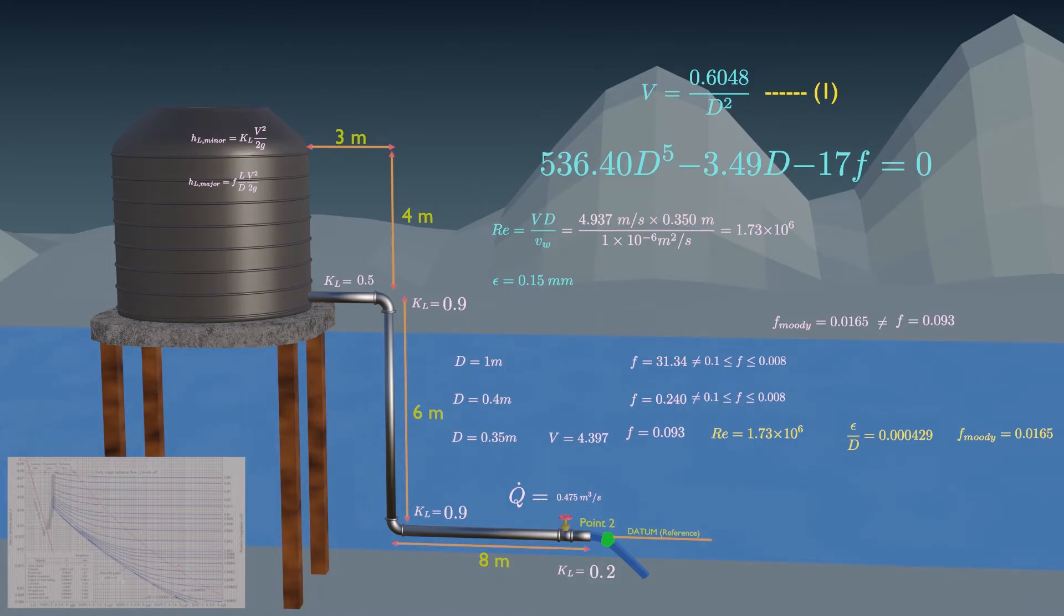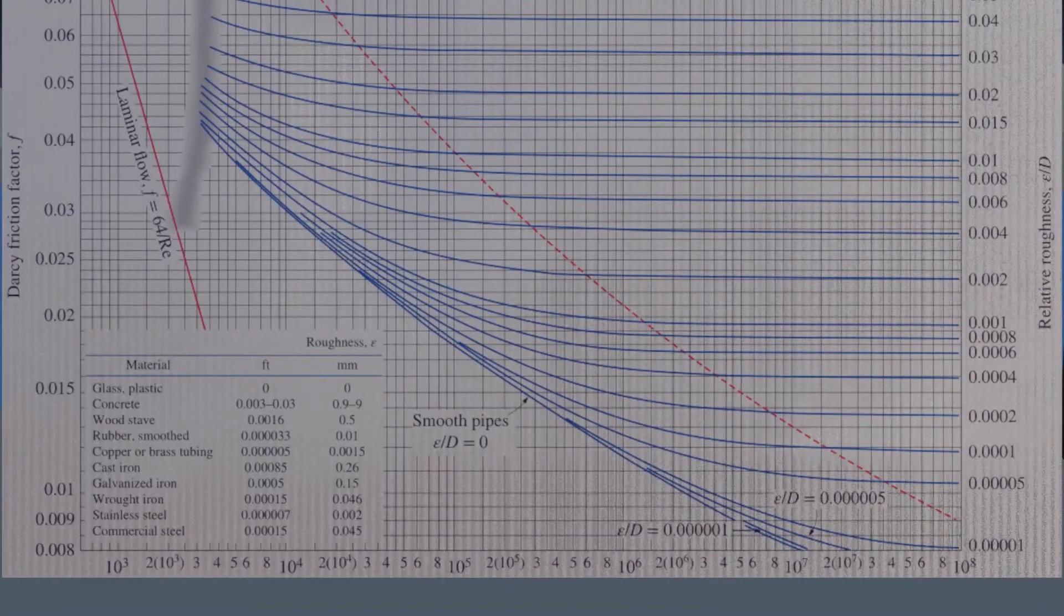So for the next iteration, choose more smaller value of d that gives an f smaller than before. If we choose diameter as 0.3 meter then f will be. Now again solve for Reynolds number and relative pipe roughness. We get the friction factor as.